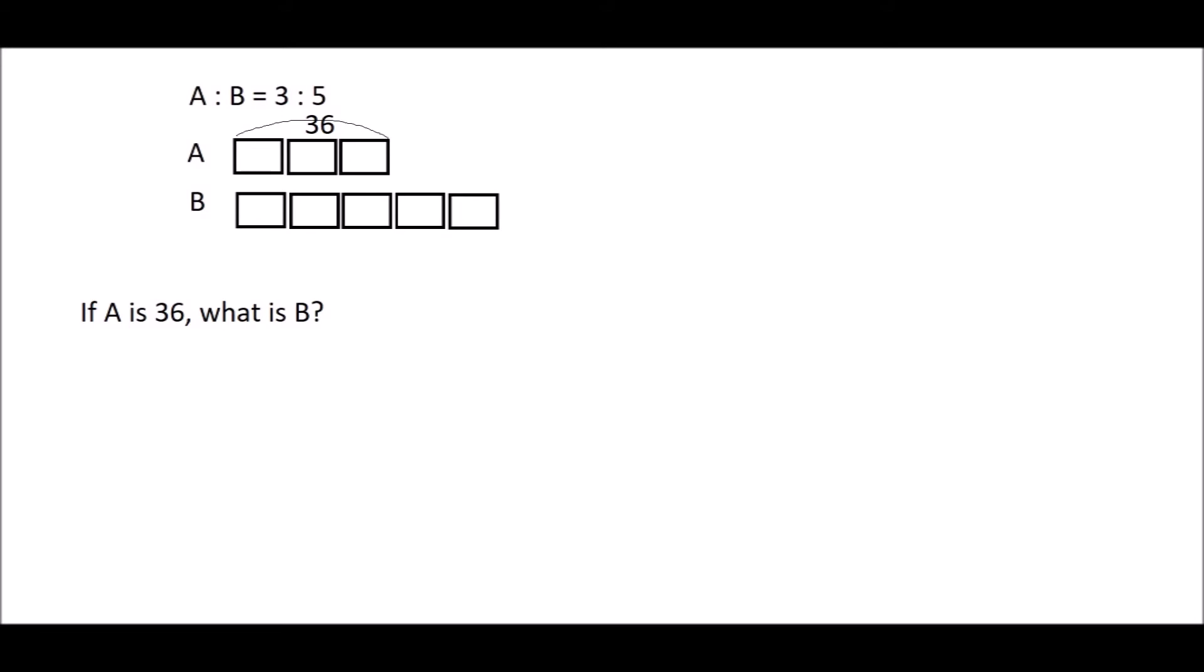36 refers to the 3 units, and therefore we can find what is one unit. And because we know one unit now, we can find B, which is five units. The key is to always find what is one unit first. If you can find what is one unit, then you can find anything.